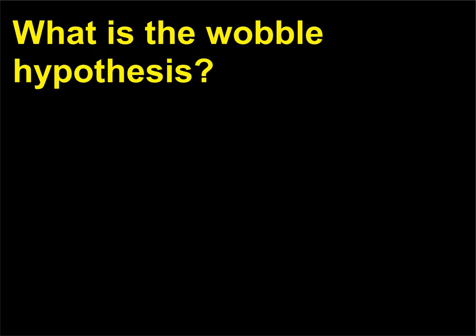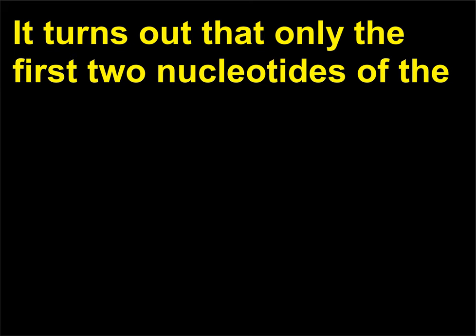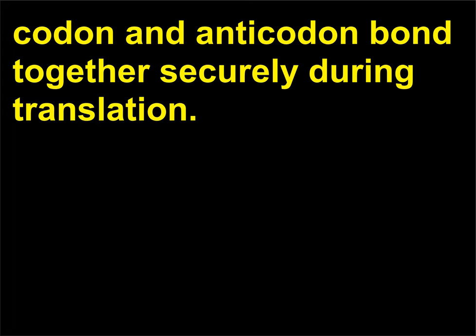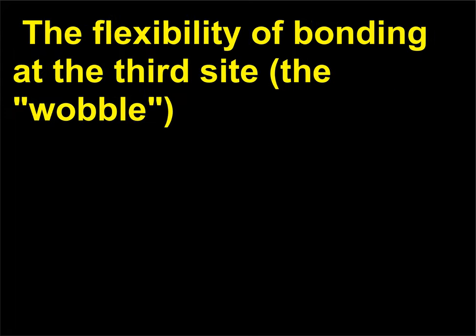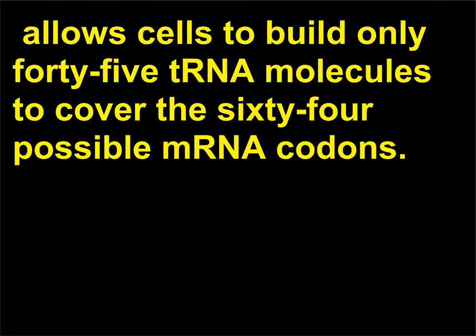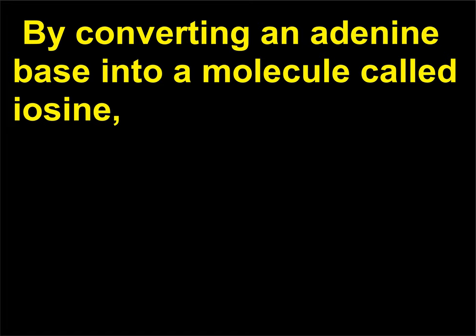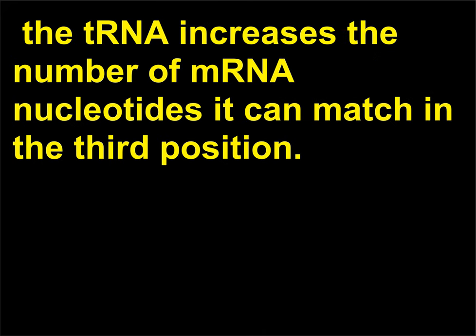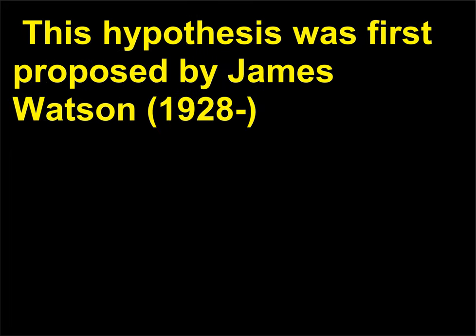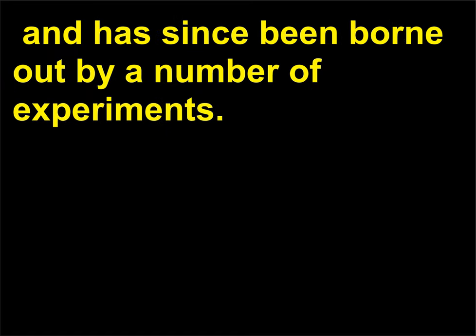What is the wobble hypothesis? It turns out that only the first two nucleotides of the codon and anticodon bond together securely during translation. The flexibility of bonding at the third site — the wobble — allows cells to build only 45 tRNA molecules to cover the 64 possible mRNA codons. By converting an adenine base into a molecule called inosine, the tRNA increases the number of mRNA nucleotides it can match in the third position. This hypothesis was first proposed by James Watson (1928) and has since been borne out by a number of experiments.